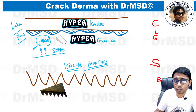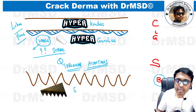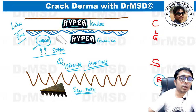Coming to the stratum basale, also called stratum germinativum: in lichen planus, the rete ridges present here are going to become saw-tooth-like. This is called saw-toothing of the rete ridges, which is also a characteristic manifestation of lichen planus.